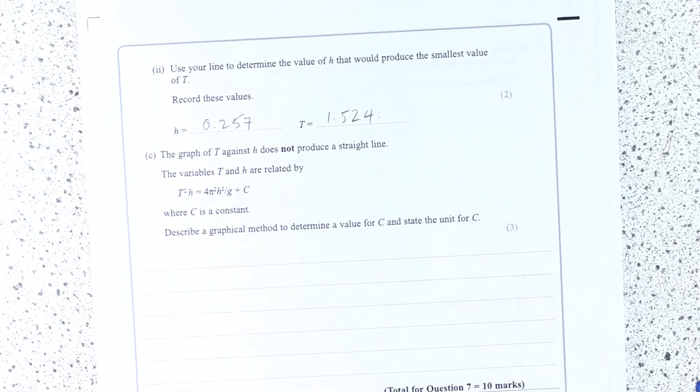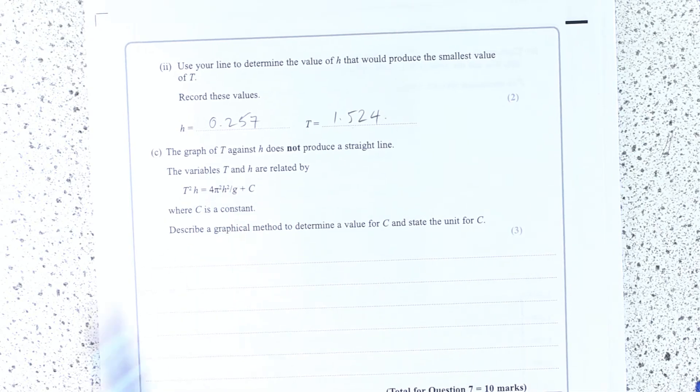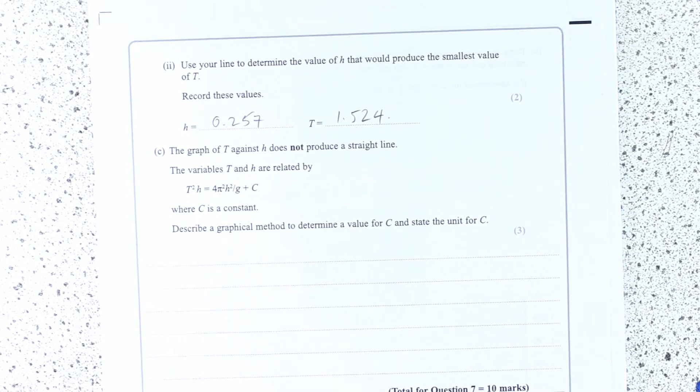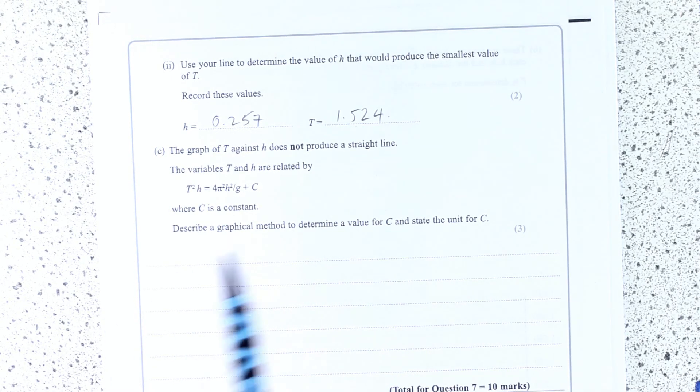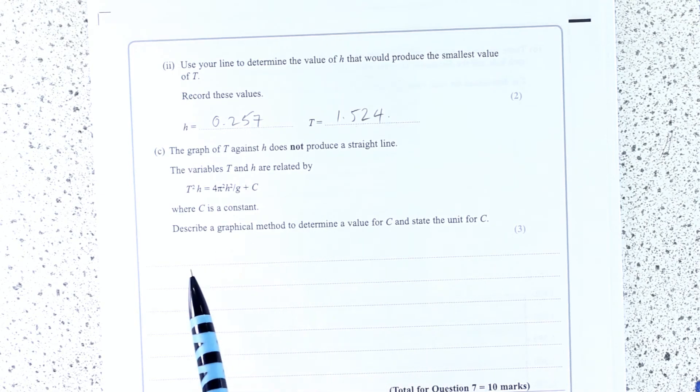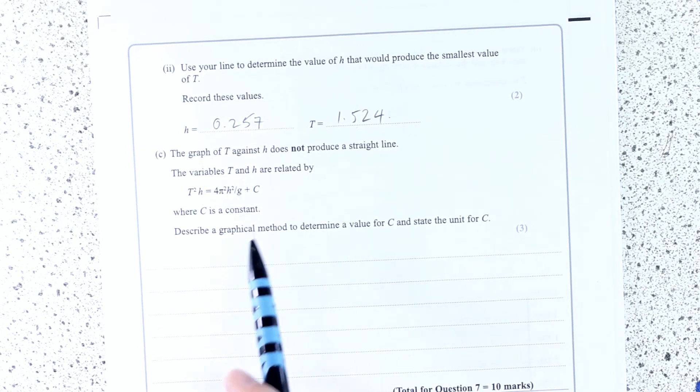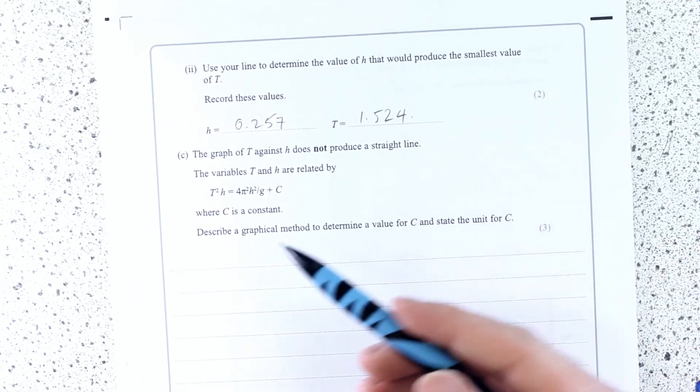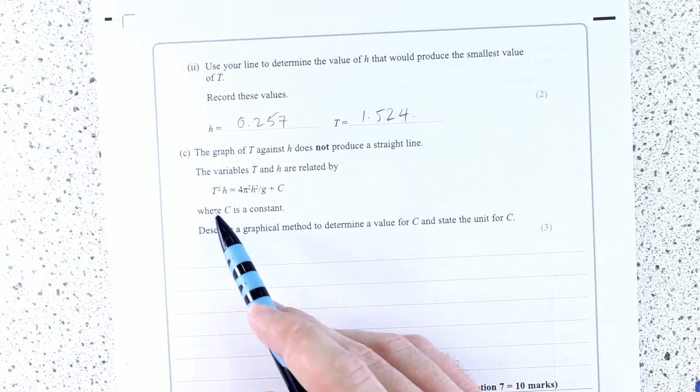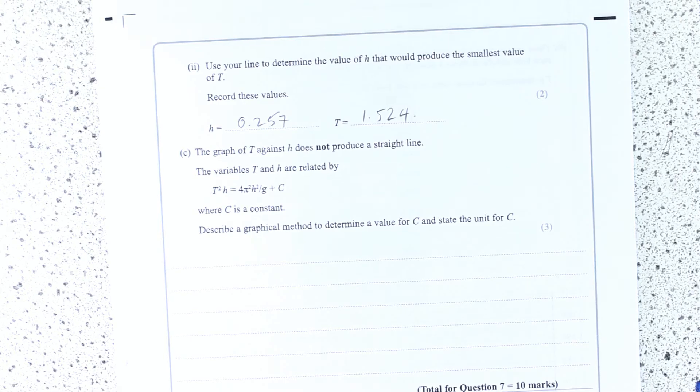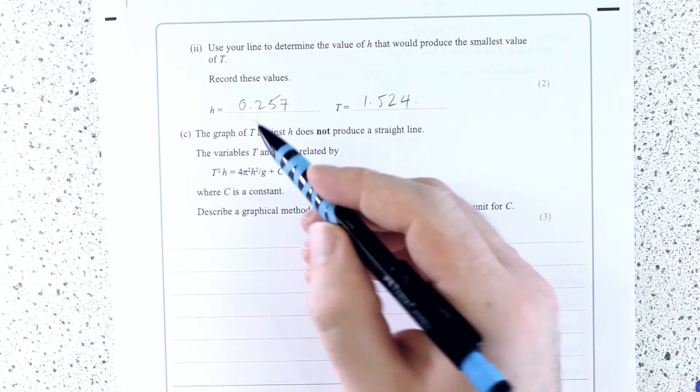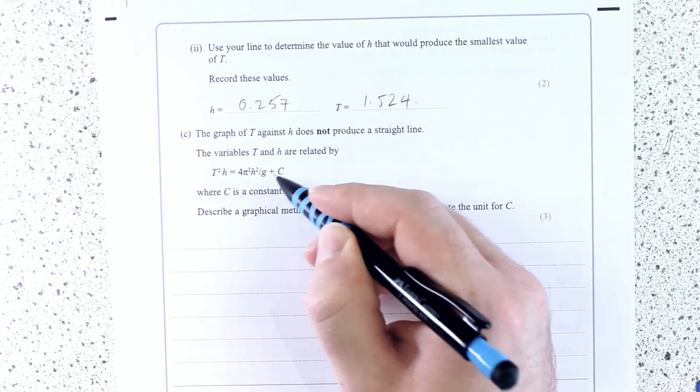The graph of t against h does not produce a straight line. The variables t and h are related by this, where c is a constant. Describe a graphical method to determine the value for c and state the unit for c. So I'm surprised in a way to not see this as being actually plot this. So often they give you data like this with a couple of blank columns and you have to work out what to plot and maybe actually go ahead and plot that. But essentially this is for just recognizing that this is y equals mx plus c. So you can do lots of different things. You're told that, well, you know, in fact, that 4π² and g are constants.